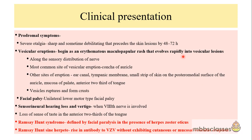Now let us see how a patient of Ramsay-Hunt syndrome presents clinically. Ramsay-Hunt syndrome is defined by facial paralysis in the presence of herpes zoster oticus. There will be facial paralysis and vesicular eruption. The prodromal symptom is usually a very sharp type of pain. Since the geniculate ganglion is involved, the location of pain is the ear. The patient presents with severe otalgia, which is very sharp, and it precedes the skin conditions by 48 to 72 hours.